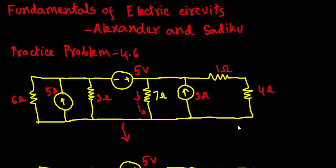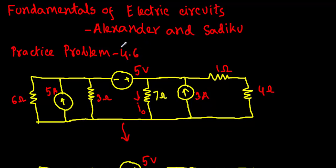This is my last example of the source transformation theorem. I take this problem from the book Fundamentals of Electric Circuits, whose writers are Charles K. Alexander and Matthew N.O. Sadiku. The problem number is practice problem 4.6 — it is a practice problem and no solution was given for it.